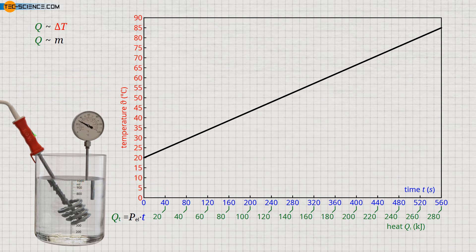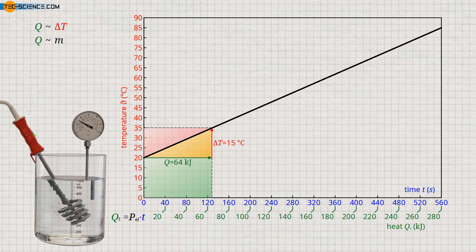Let us now take a closer look at the heat-temperature diagram obtained. It shows a linear relationship between the heat supplied and the increase in temperature. Due to the linear course, it is immediately clear that supplying a certain amount of heat Q always leads to the same temperature change ΔT.